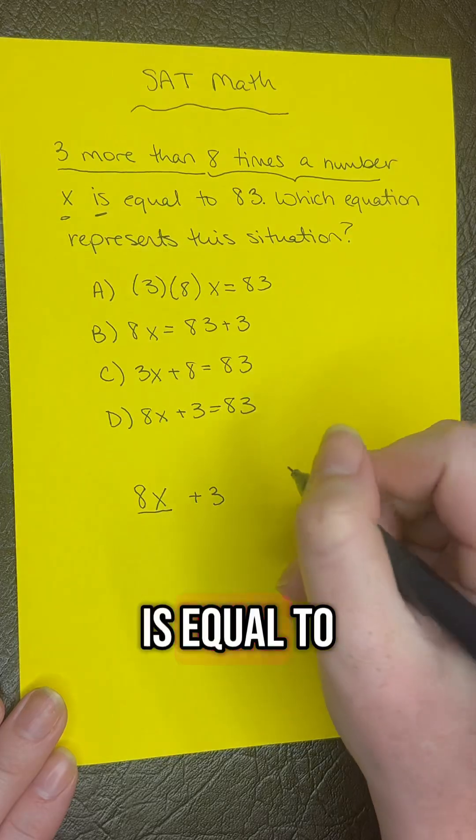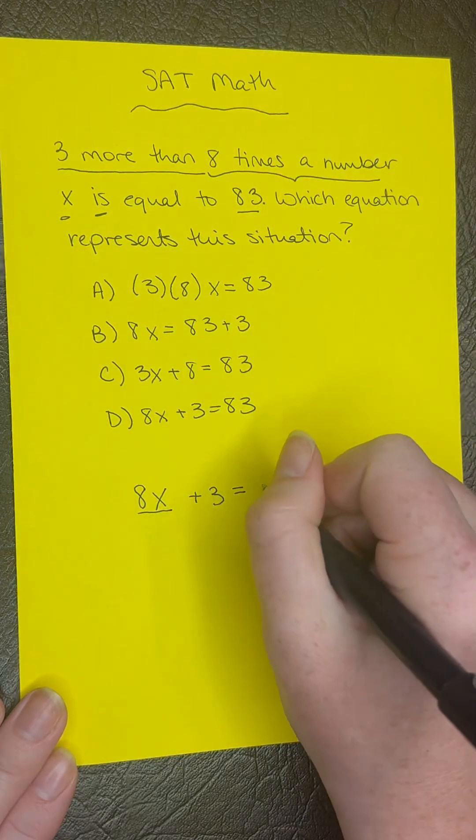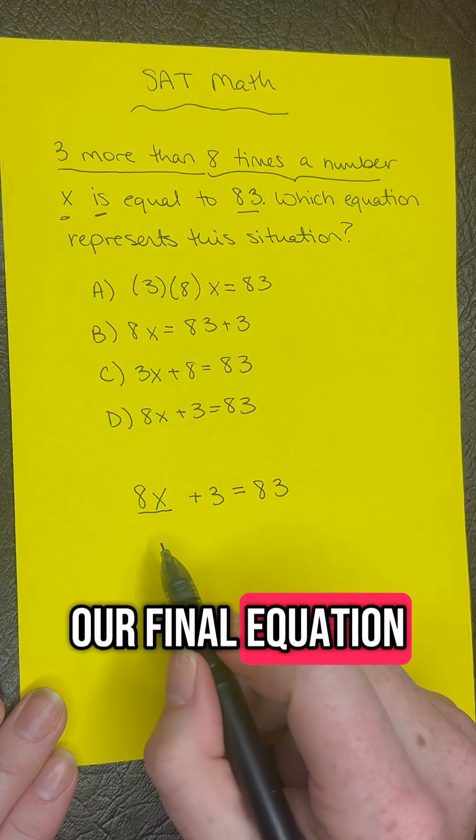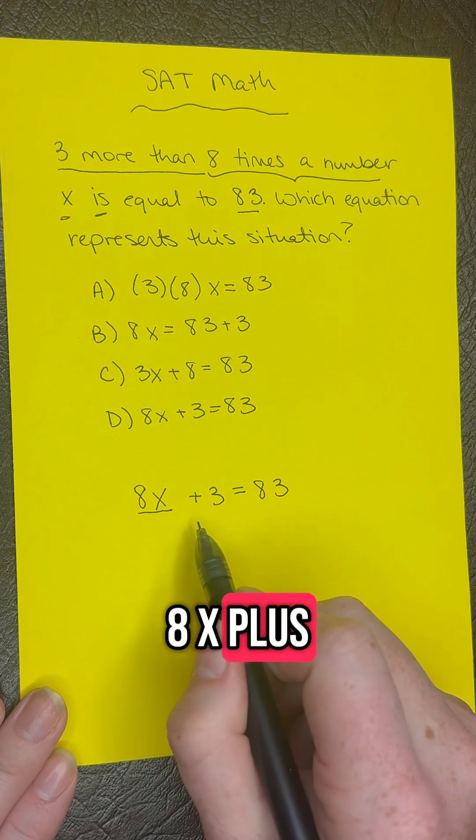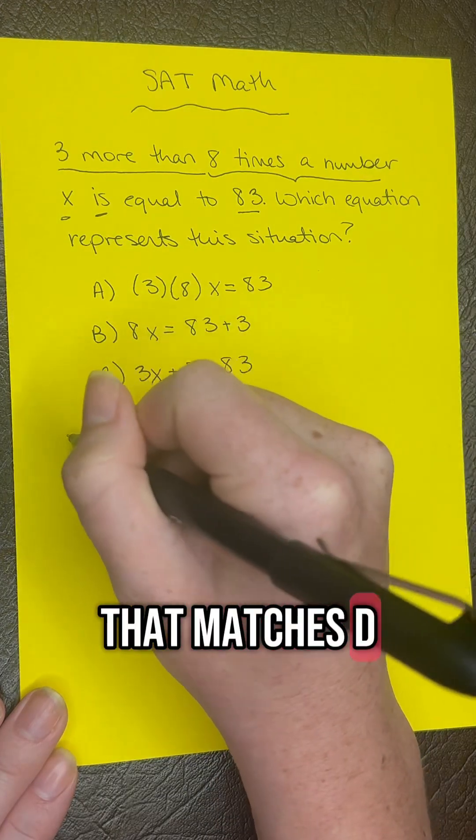Is equal to, so we have an equal sign, 83. So this is going to be our final equation. 8x plus 3 equals 83. That matches d which is our answer.